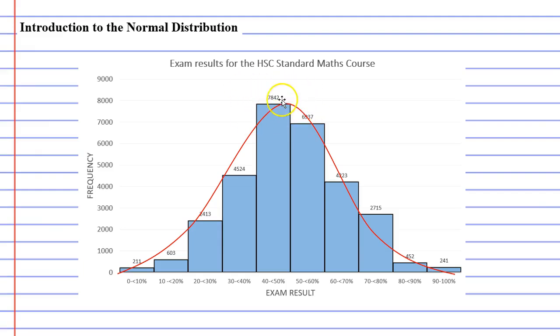We can see that most students got between 40 and 50 percent in their exams. And as you move to the right, or as the results increase in value, you get less and less students. So not many students got 90 to 100 percent. And also, when you move to the left, you notice that not many students got 0 to 10 percent.